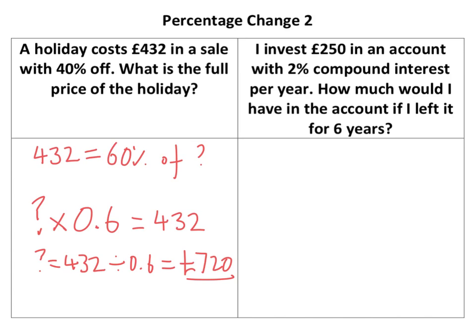Also, the reason why you can't just say: why don't I just find 40% of £432 and add it on? Well, 40% of £432 is less than 40% of £720. So that's why that doesn't work, and you've got to be a little bit careful — read the question carefully.